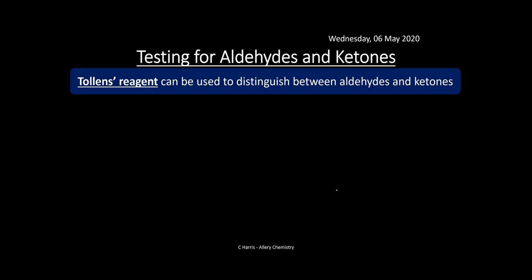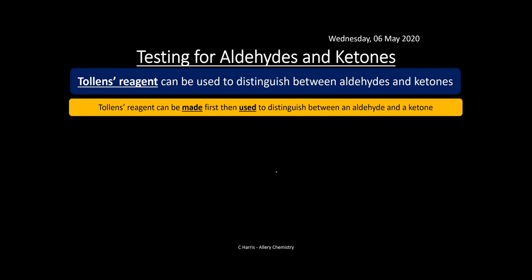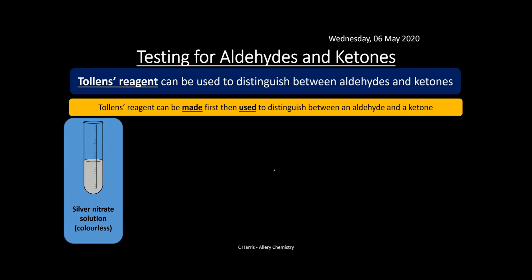Tollens' reagent can be used to distinguish between aldehydes and ketones. It's a reagent that gives a nice colourful result. Tollens' reagent has to be made first — you get this nice silvery colour at the end, which is really striking.